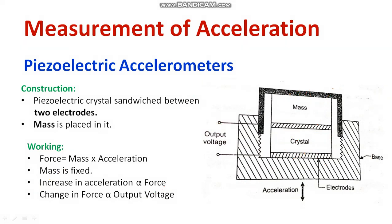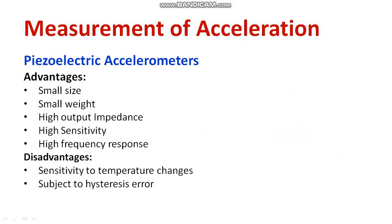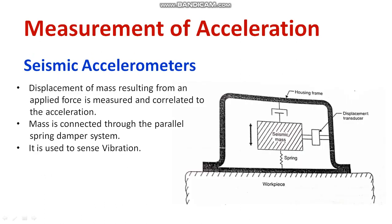This is a simple method of measurement of acceleration, but sometimes the accuracy is a concern. Sensitivity to temperature is a main issue and it may be subject to hysteresis error also. But there are a lot of advantages: compact size, weight is very less, high output impedance, sensitivity is more, and high frequency response. For the setbacks, we need to use the seismic type accelerometer.